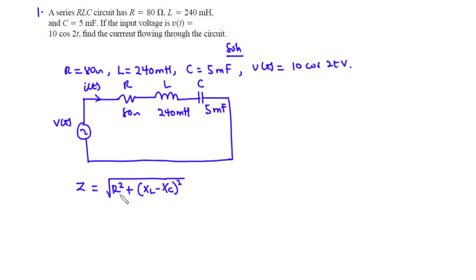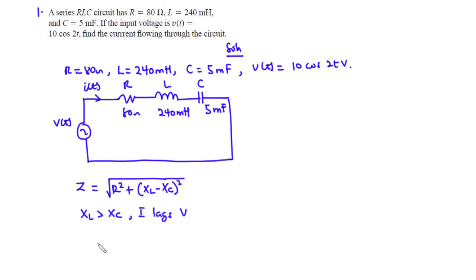Where R is the resistance, XL is the inductive reactance, and XC is the capacitive reactance. Now if XL is greater than XC, the overall impedance of the circuit is inductive, hence the current is said to lag the voltage. If XC is greater than XL, the overall impedance of the circuit is capacitive, and the current is said to lead the voltage.